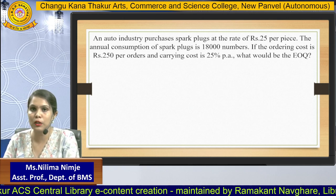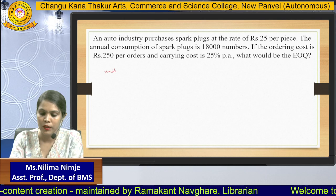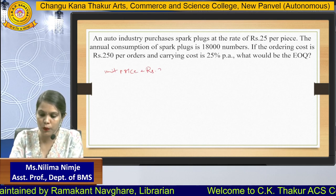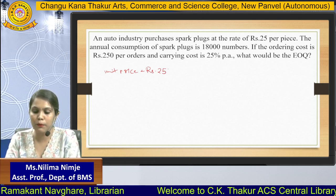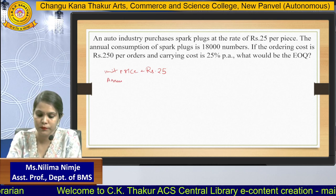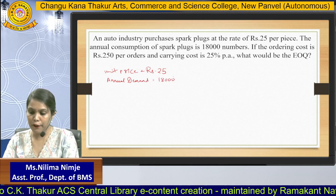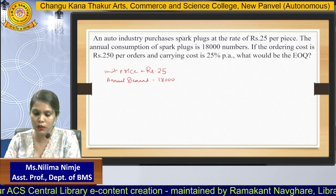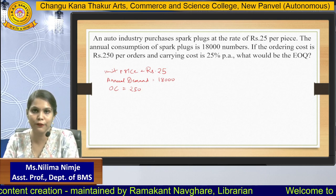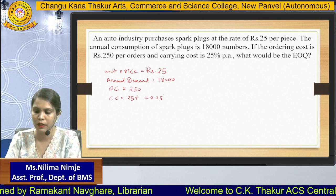The first numerical: an auto industry purchases spark plugs at the rate of ₹25 per piece. Given data — unit price: ₹25, annual demand: 18,000 units, ordering cost: ₹250 per order, and carrying cost: 25% per annum, which equals 0.25.